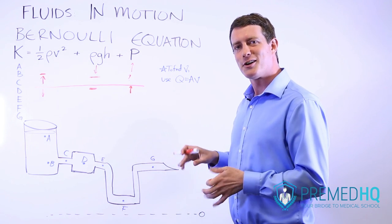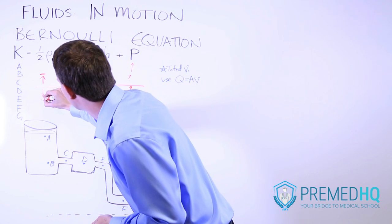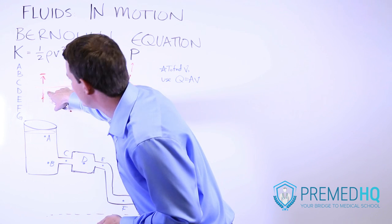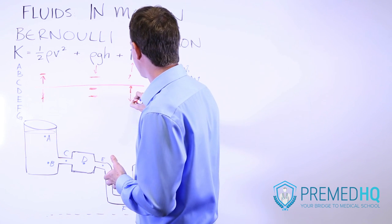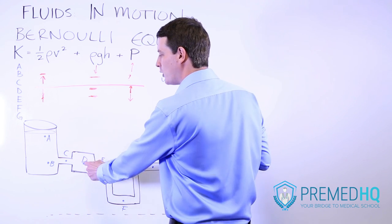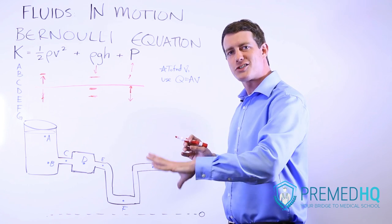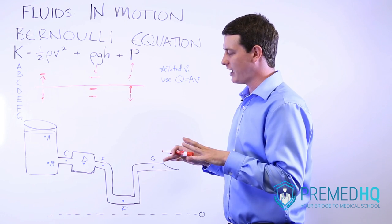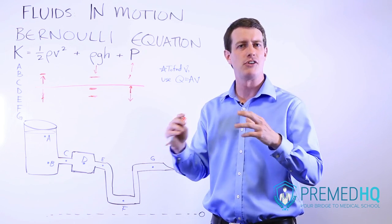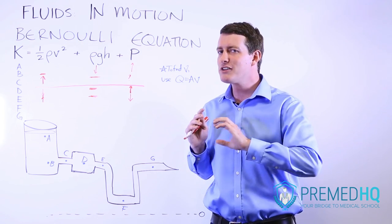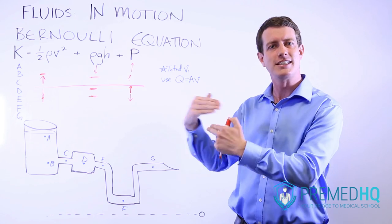Moving from D to E, the cross-sectional area gets smaller, so velocity goes up and the kinetic energy component increases. Height doesn't change, so with KE rising and height constant, pressure must go down at point E. This is common throughout many systems: if fluid is traveling faster, pressure is lower. That's because pressure is established by random translational motion of particles colliding, but fast-moving fluid has less random motion — it's all moving forward — so particles are less likely to collide.